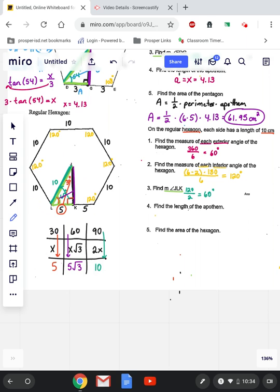So a side that's across from 60 would be 5 square root of 3. And that's our apothem. So the apothem of this hexagon equals 5 square root of 3.